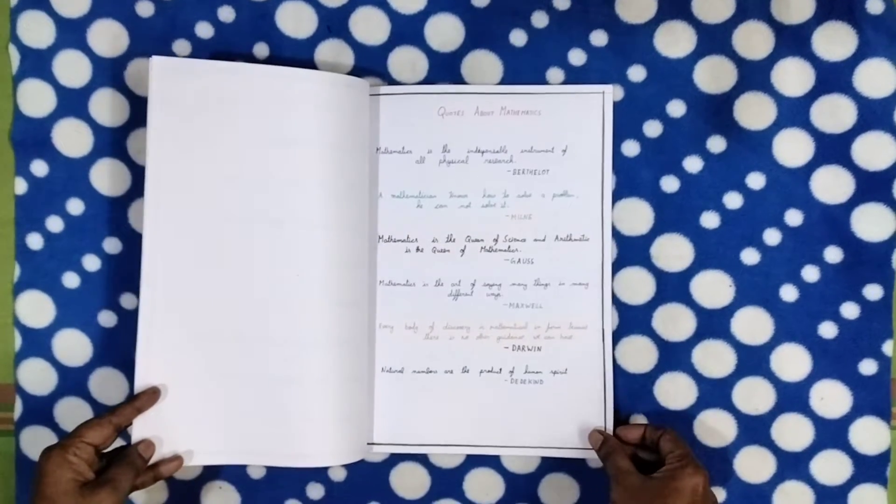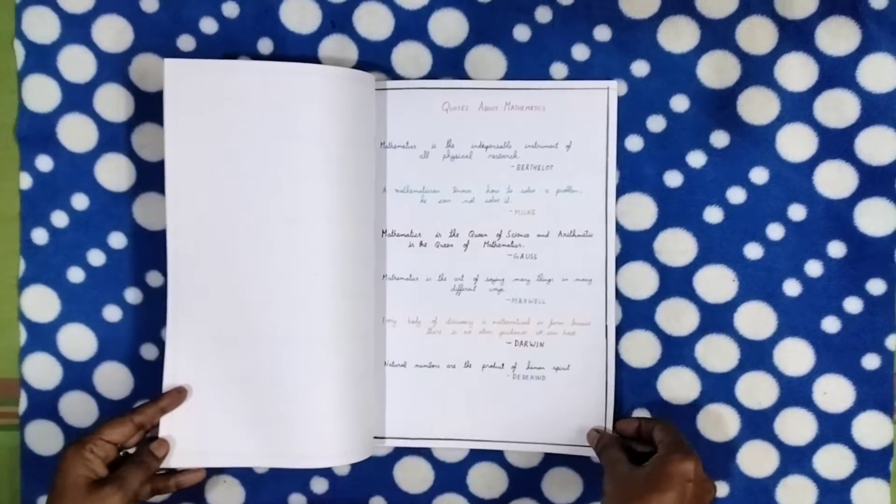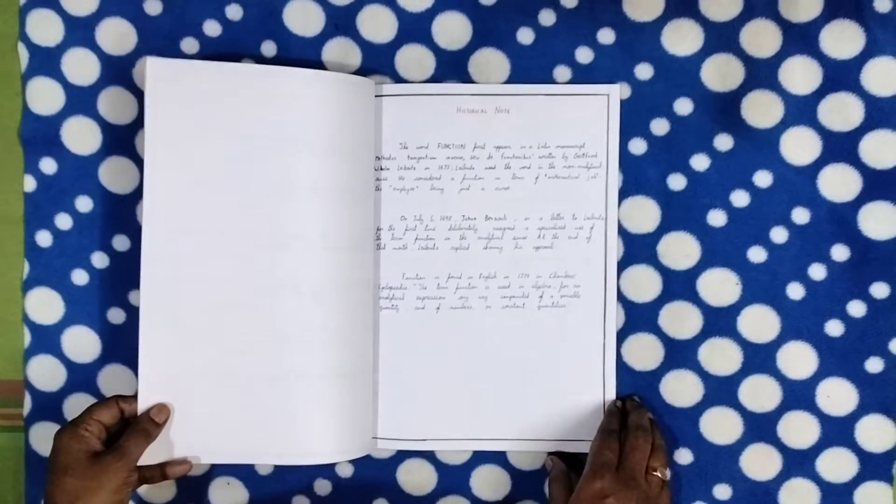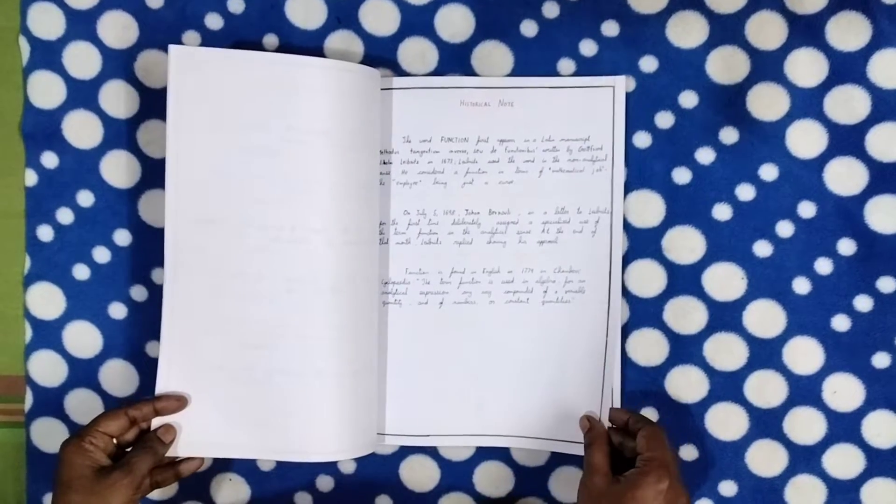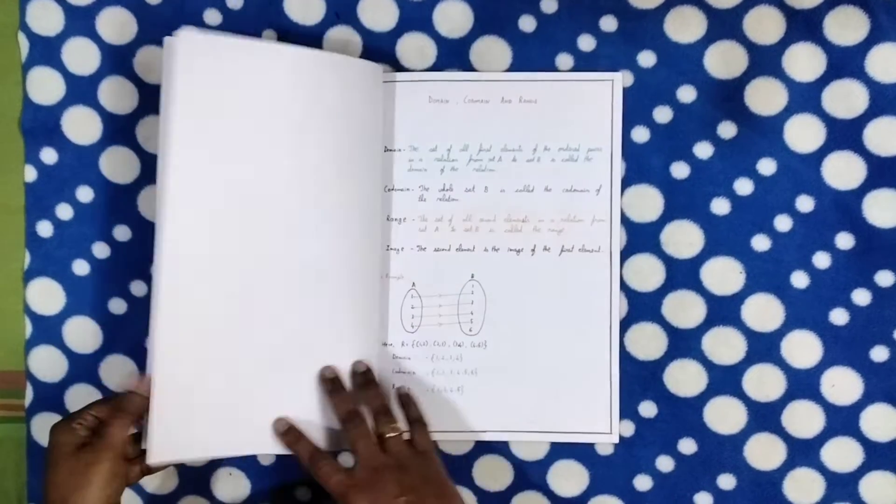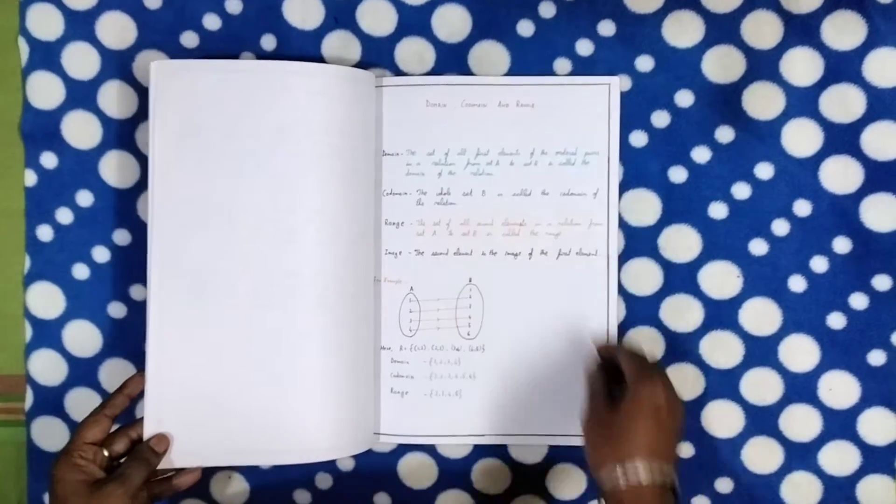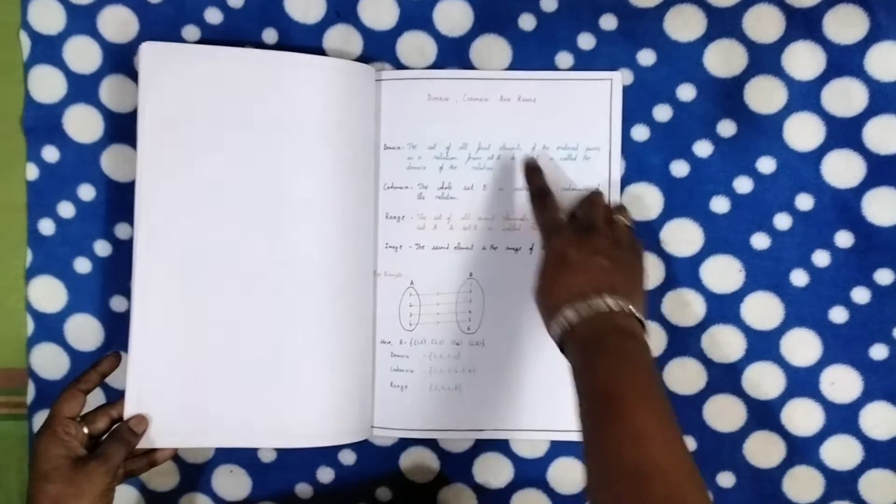some quotes about mathematics which he admired from a few mathematicians. He's given a historical note about this functions and relations lesson. Then he's explained what's domain, codomain, and range, and with a simple example he's explained what it is.